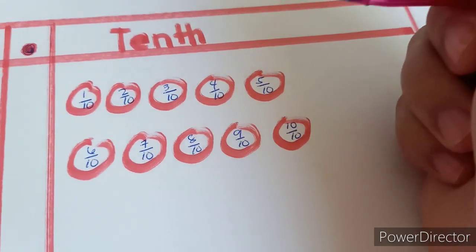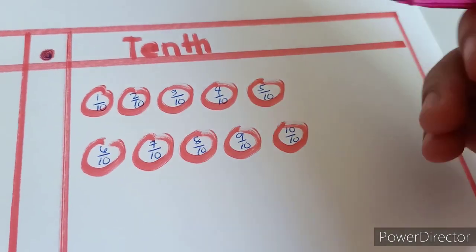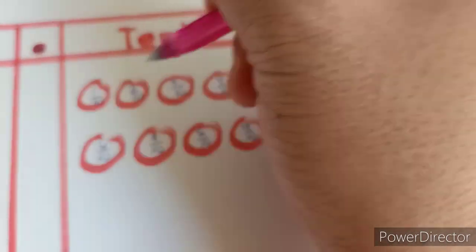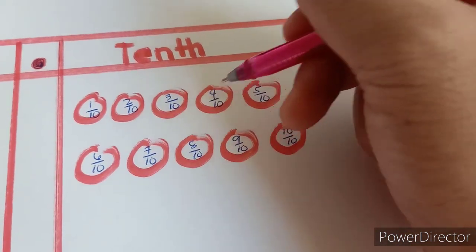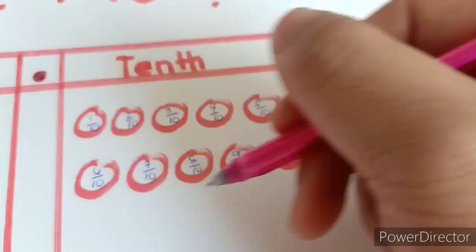So in this part, these are the tenths. 1 tenth, 2 tenths, 3 tenths, 4 tenths, 5 tenths, and so on.